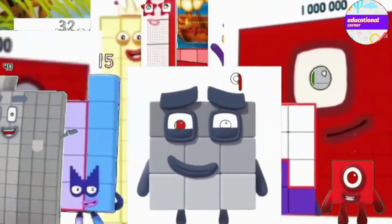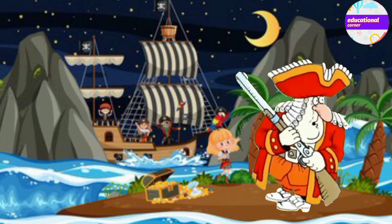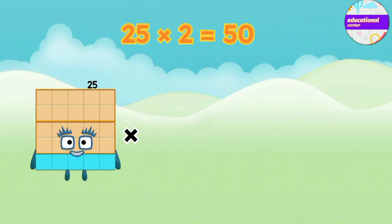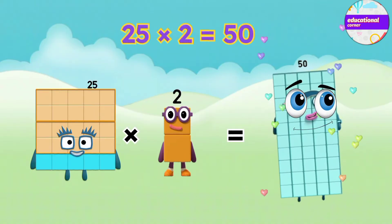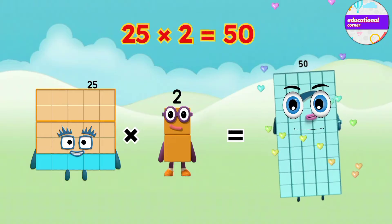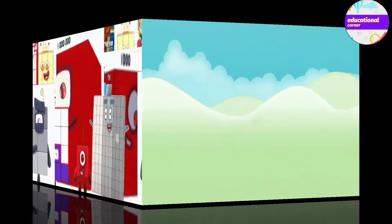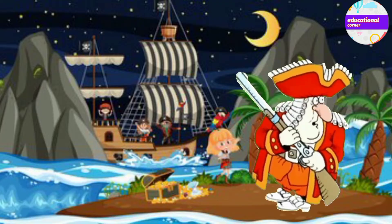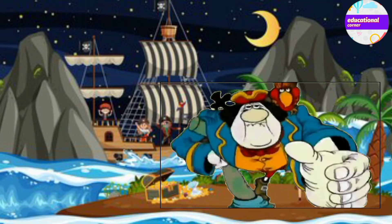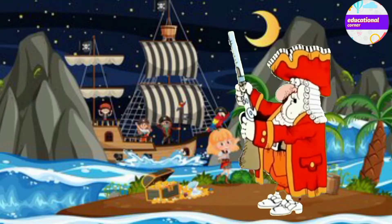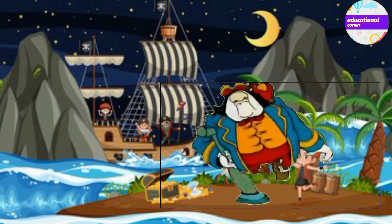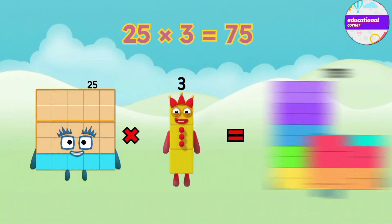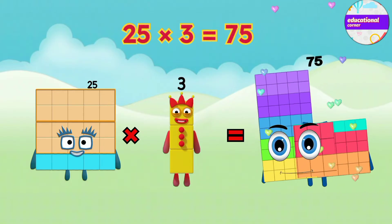Do some more! Do some more! 25 multiplied by 2 equals 15. Do some more! Do some more! 25 multiplied by 3 equals 75.